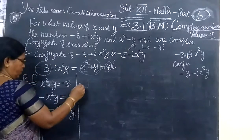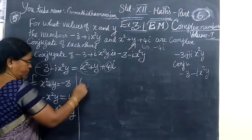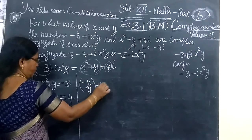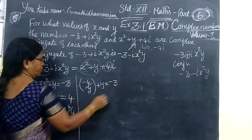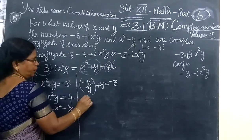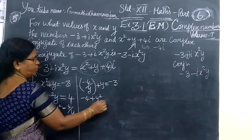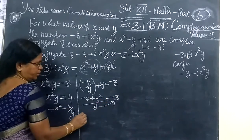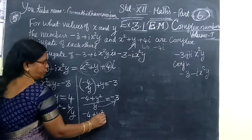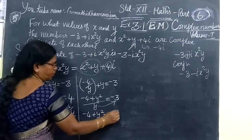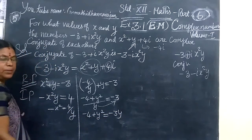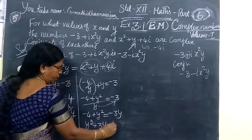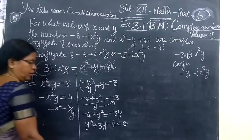Substitute. This value of x times y, you are writing as minus 4 divided by y. Then plus y equals minus 3. So minus 4 plus y times y equals minus 3y. Taking y to that side: minus 4 plus y squared equals minus 3y. Therefore, y squared plus 3y minus 4 equals 0. Multiply: minus 4 times 1 gives minus 4, and adding gives 3.